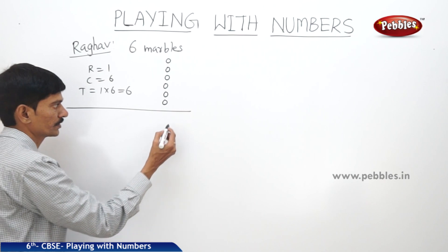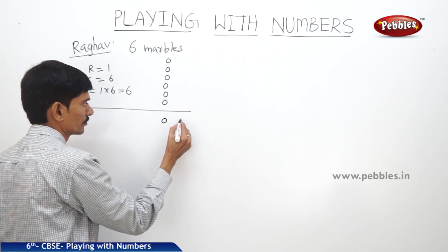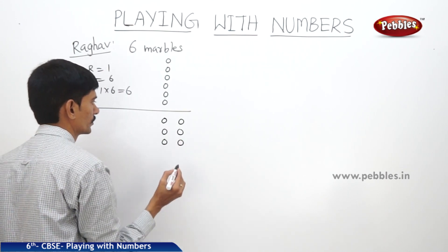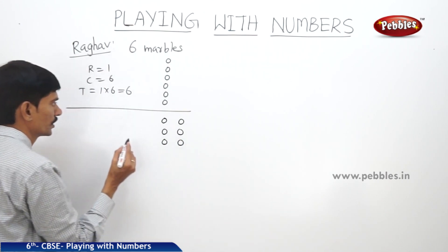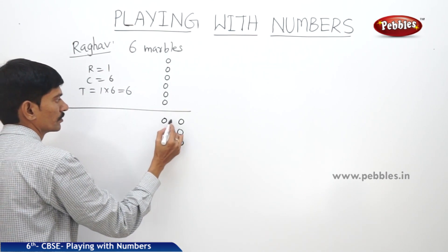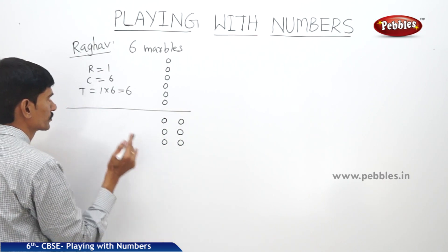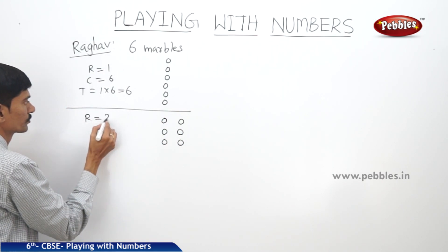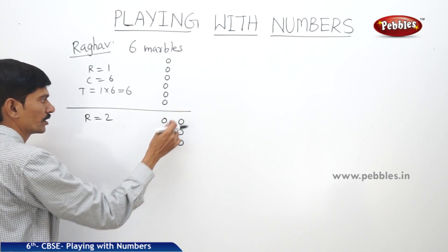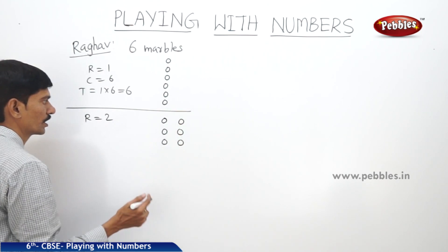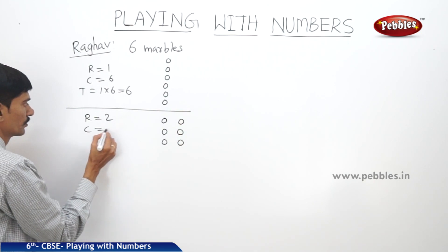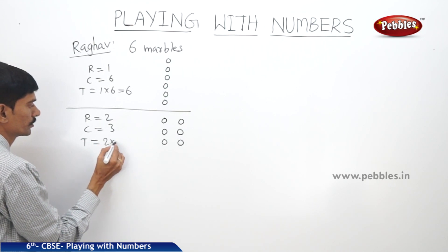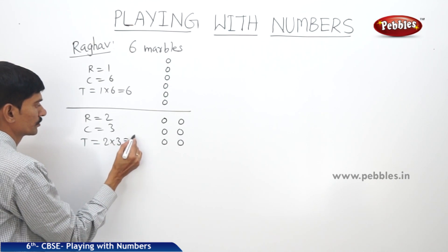Now if he wants to arrange two marbles in each row, there are two marbles in each row. The number of marbles in each row equals two, and the number of marbles in each column is three. So the total number of marbles is two into three, which equals six.